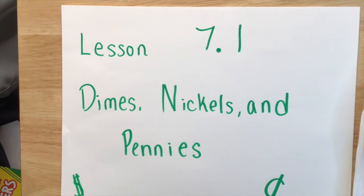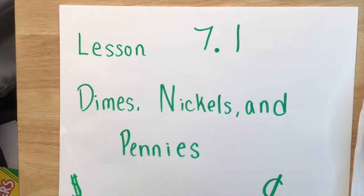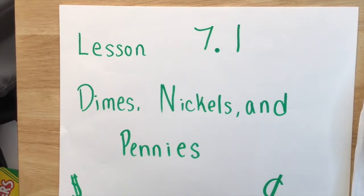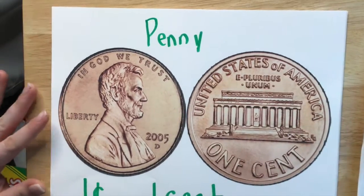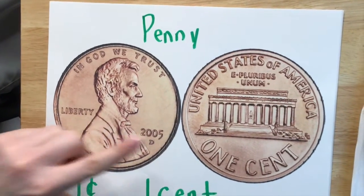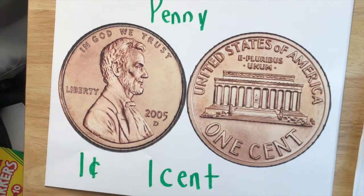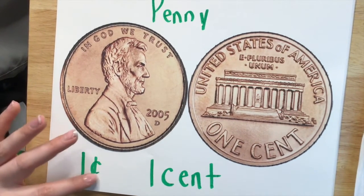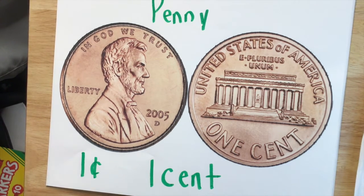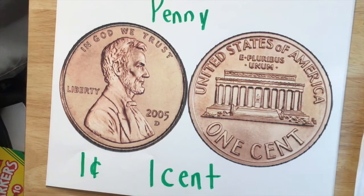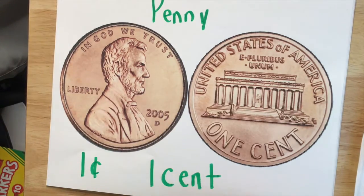This is lesson 7.1. It is the first lesson in our new chapter 7 math books. We are going to start this chapter by learning about dimes, nickels, and pennies. So let's first take a look at a penny. This is a picture of a penny blown up. This is the heads and the tails of a penny. A penny is worth one cent. So another way to write that is one with a c and a line through it. So that c with a line through it is actually the symbol for cent. So here are a couple of pennies that I have and they are worth only one cent.